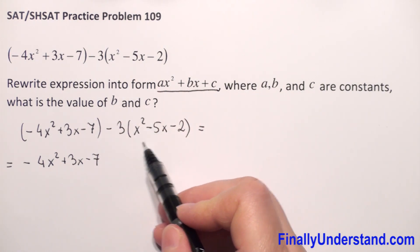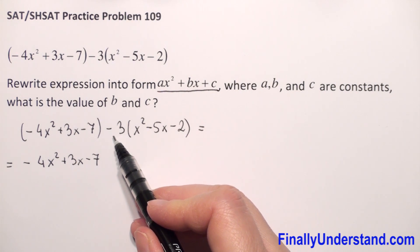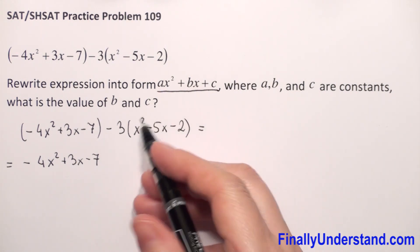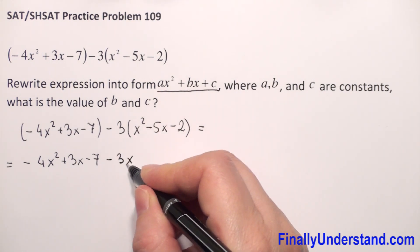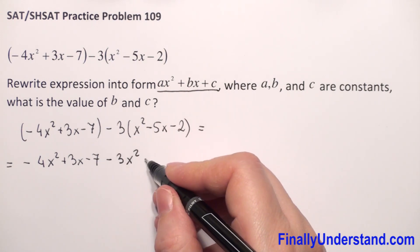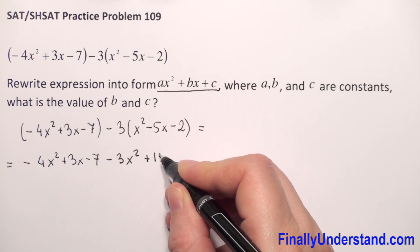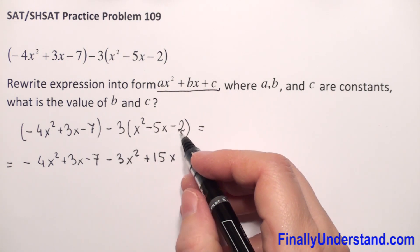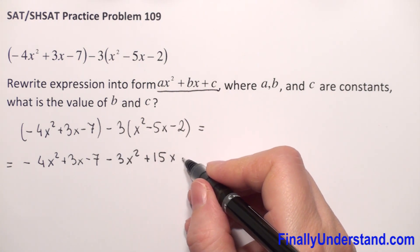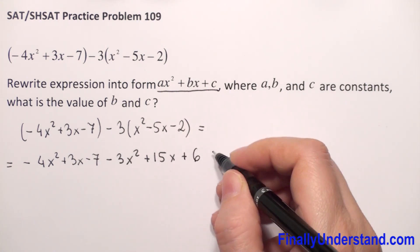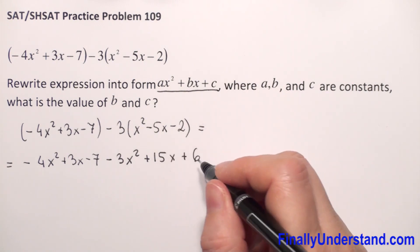And now I have to multiply every expression in the second parenthesis by negative 3. So negative 3 times x squared is negative 3x squared. Negative 3 times negative 5x, so it will be positive 15x. Negative 3 times negative 2 is positive 6. Negative times negative give me always positive.